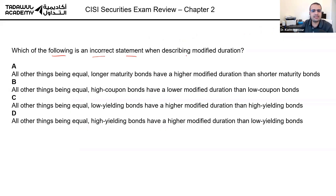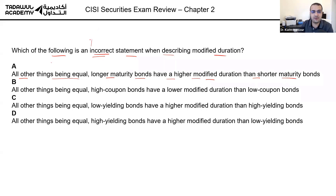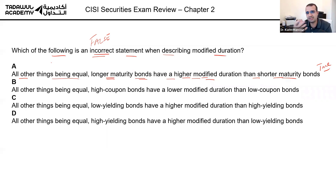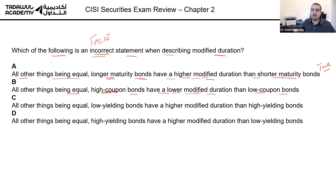Which of the following is an incorrect statement when describing modified duration? All else being equal, longer maturity bonds have a higher modified duration than shorter maturity bonds — that's true, the longer the term the riskier. Modified duration is a measure of sensitivity to interest rates. High coupon bonds have a lower modified duration than low coupon bonds — also true, because high coupon bonds pay you more so your risk is lower.